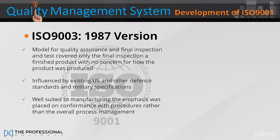ISO 9001 1987 was also influenced by existing United States and other defence standards and military specifications, and was well suited to manufacturing, as the emphasis tended to be placed on conformance with procedures rather than the overall process management, which was the likely intent.